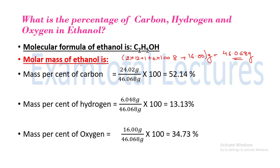We will use this molar mass in our calculations for the mass percent of different constituents. First, mass percent of carbon: that will be 2 into 12.01, which is 24.02 grams, divided by the molar mass of ethanol, into 100. So it is 52.14%.